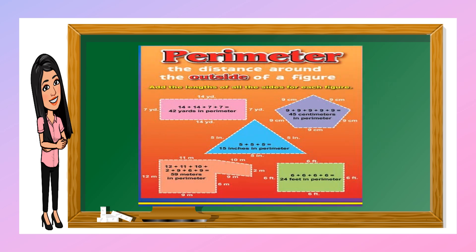When we are finding the perimeter of any figure, we add the measurement of the distance around the outside of the figure. So for example, this rectangle has 14 yards, 17 yards, 14 yards, and 17 yards. All you need to do is add 14 plus 14 plus 17 plus 17 equals 62 yards in perimeter.